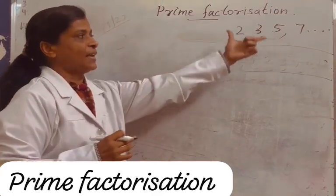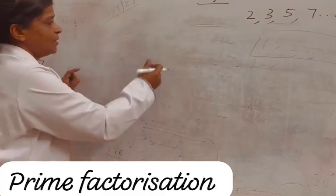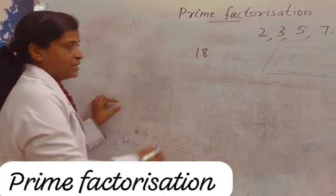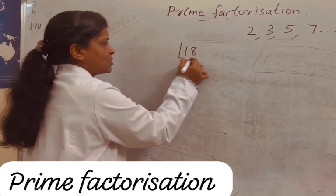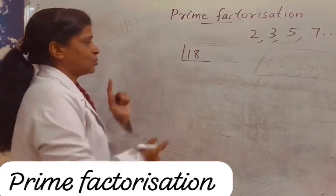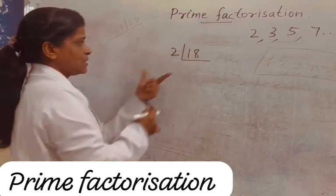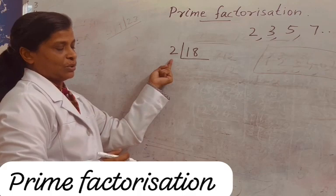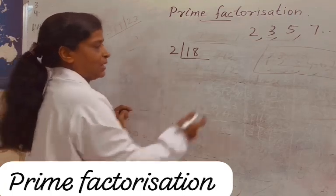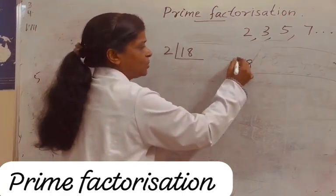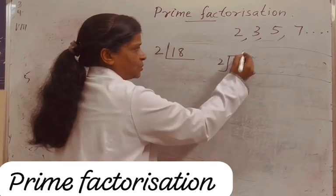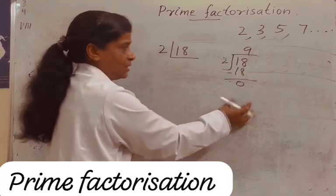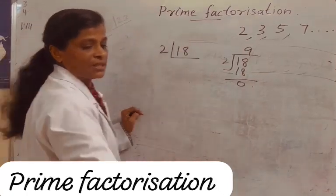Now you have an idea of what prime numbers are. Let us do prime factorization of 18. First, you have to start with the smallest prime number, 2. This is called the short division method. In long division, for 18 divided by 2: 2 eights are 16, remainder 0. That is the long division method; this is the short division method.